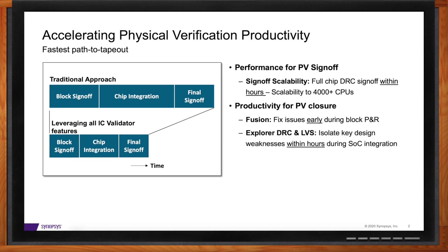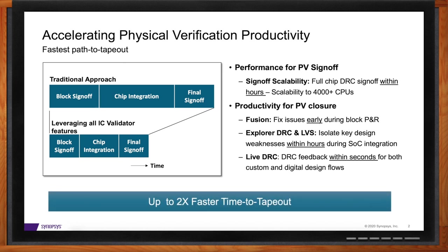The bigger picture is that full flow productivity is the key to faster physical verification closure. There are multiple steps in the flow: you start with block implementation, then combine all the blocks into a full chip, and then you have the final sign-off. So you can verify and fix as you go — during block implementation you can be highly productive, during chip integration by focusing on big macro-level problems, and then of course the final sign-off. This full view of full flow productivity is the key to accelerated design closure.